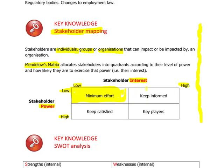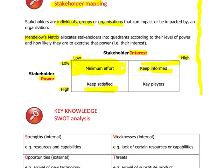If a stakeholder has got a high level of interest but a low level of power, then because of the low power, management shouldn't change their strategy for it — but because this particular stakeholder is interested, they should be kept informed. What about a stakeholder that has got a low level of interest but a high level of power? Well, we should keep them satisfied, because although they're not interested, they have got a high level of power. And that leaves the final quadrant, which is key players — high level of interest and high level of power — and according to Mendelow's Matrix, those are the stakeholders we should keep happy.